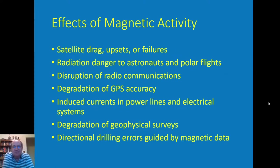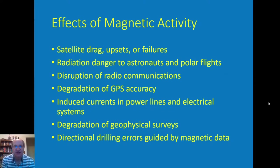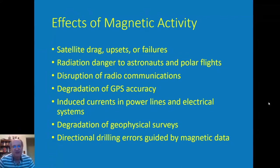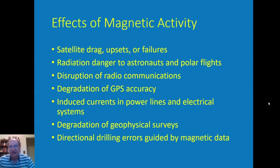For astronauts there's the radiation danger, and also for any flights that go over the pole. We all know about the disruption of radio communications, especially in HF. Since it can affect satellites, it can degrade the accuracy of GPS. It can also induce currents in power lines and electrical systems. For geophysical surveys, changes in the magnetic field can be a nuisance. A lot of oil companies use directional drilling guided by magnetometer data, and during a storm where the field is changing rapidly it can create errors.